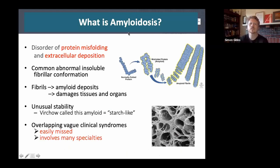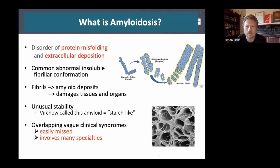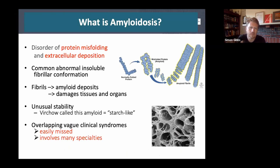Amyloidosis is a disorder of protein misfolding and extracellular deposition. Normally folded proteins kink, misfold, and aggregate into amyloid fibrils that deposit in the extracellular space. The fibrils themselves can be extremely stable — the word 'amyloid' comes from a word meaning starch — and can be very hard and insoluble. Because it has a variety of different presentations, it can involve many specialties and can be easily missed.